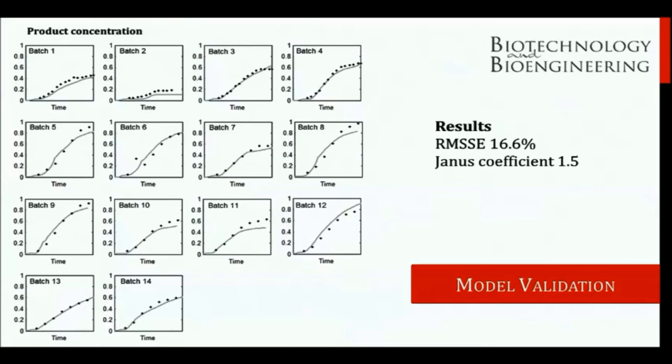The data is read from the OPC server every 30 seconds and the model is solved every 5 minutes. This means that a user has an updated prediction of the biomass concentration and the product concentration every 5 minutes, which is very valuable as the alternative is manual sample analysis. The results of the model validation show that we have a good fit to 14 new batches of data which were solved online.